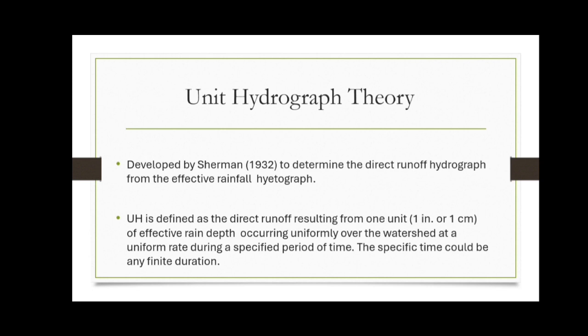Unit Hydrograph Theory. Developed by Sherman in 1932 to determine the direct runoff hydrograph from the effective rainfall hydrograph. Unit hydrograph is defined as the direct runoff resulting from one unit of effective rain depth occurring uniformly over the watershed at a uniform rate during a specified period of time.